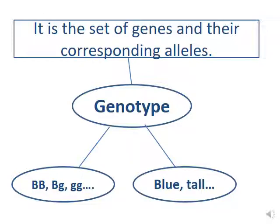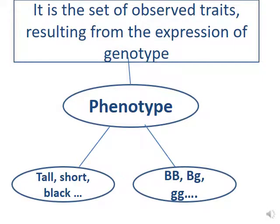The genotype is the set of genes and their corresponding alleles — for example, BB, BG, GG, and so on. The phenotype is the set of observed traits resulting from the expression of the genotype — for example, tall, short, blue, green, violet, blonde, and so on.